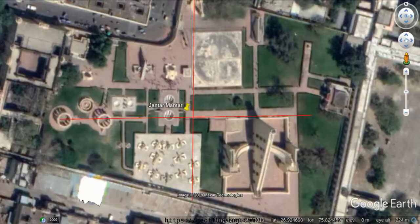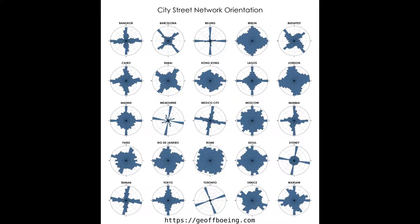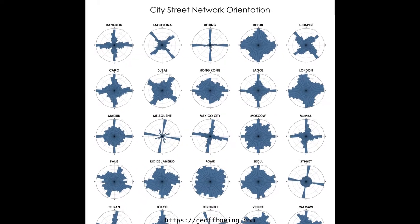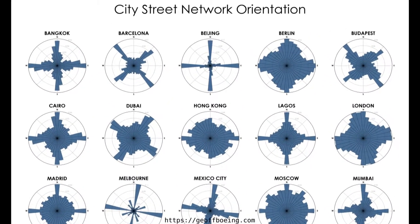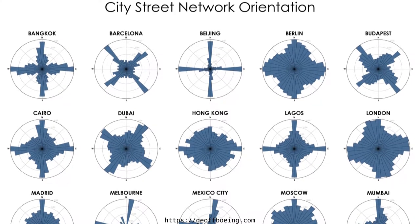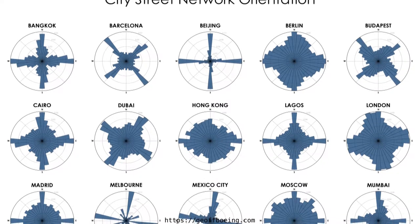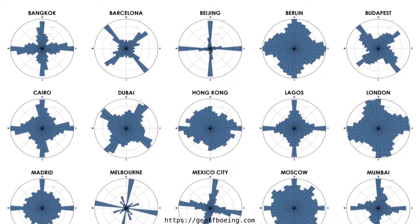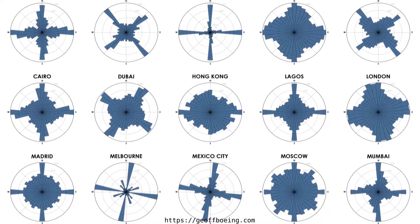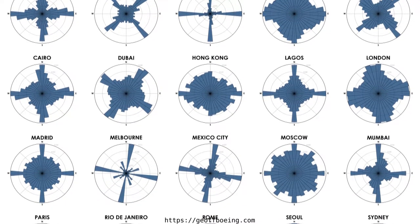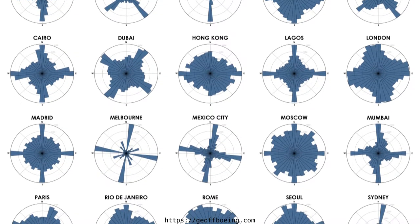Moving on to a very interesting research done by Jeff Bowing — I recommend checking out his website. Jeff Bowing has done a lot of research into the orientation of major cities around the world. You can see from Bangkok down to Warsaw, listed in alphabetical order. For example, Beijing is cardinally oriented, and I will explain later why — and around what — it is cardinally oriented. That is very interesting to notice.